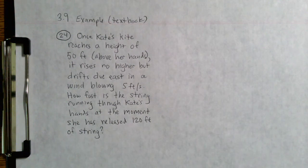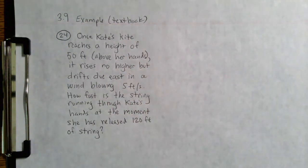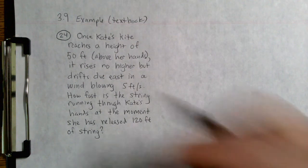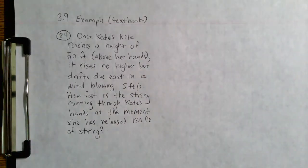I'm going to read through this and then sketch a diagram, and we'll take it from there. Once Kate's kite reaches a height of 50 feet above her hands, it rises no higher but drifts due east due to a wind blowing at 5 feet per second. How fast is the string running through Kate's hands at the moment she has released 120 feet of string?